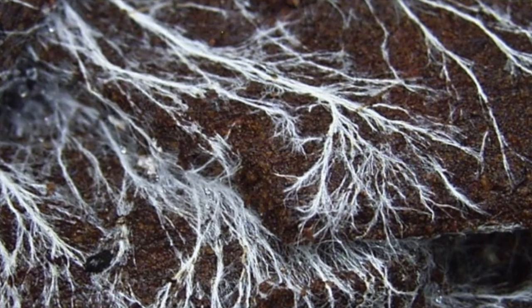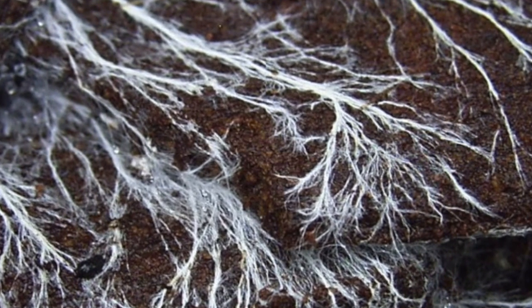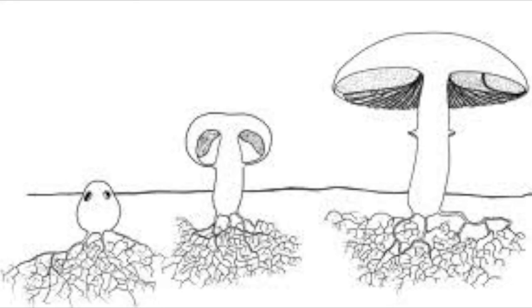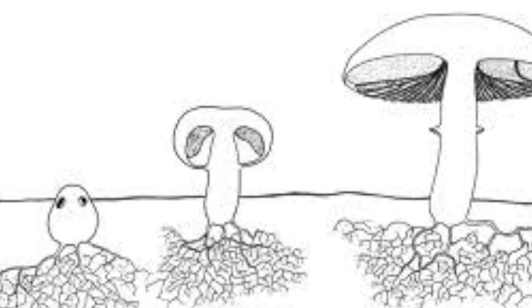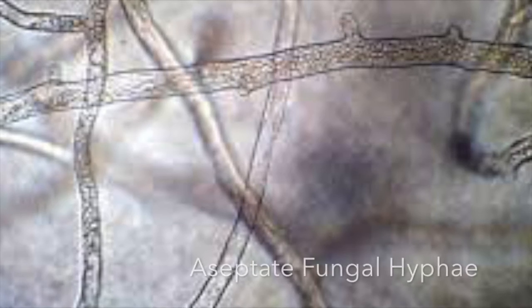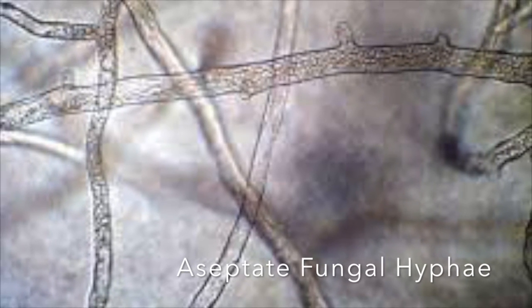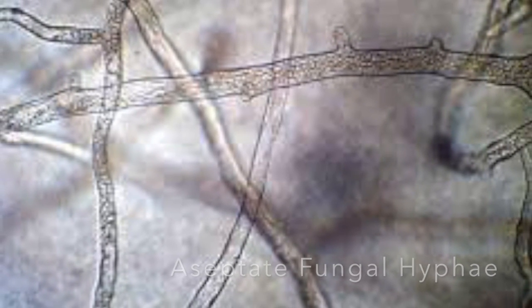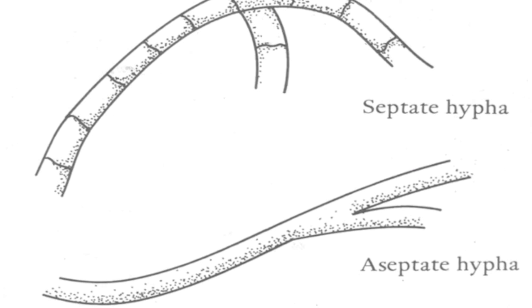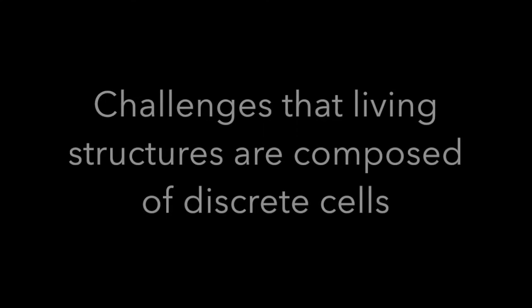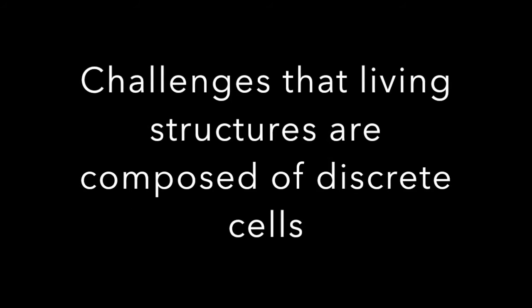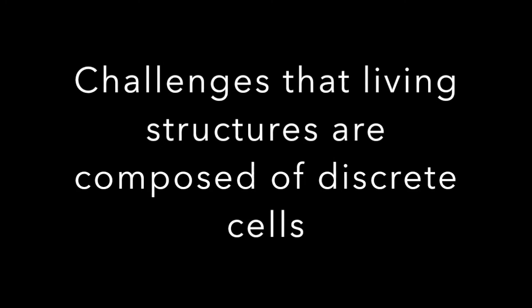Lastly, fungal hyphae are the vegetative structures of fungus — imagine roots, but specific to only fungi. They are sometimes referred to as mycelium. Some types of hyphae are aseptate, meaning there are no walls dividing individual cells. This gives the appearance that they contain many many nuclei, and challenges the idea that living structures are composed of discrete cells.